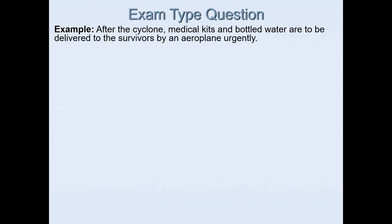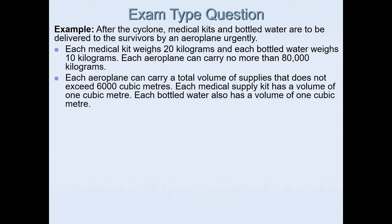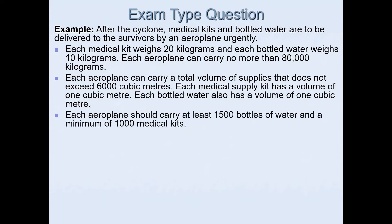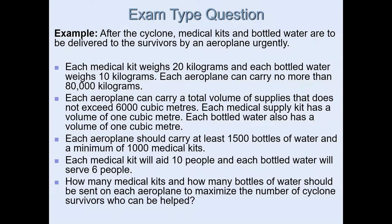In this example, after a cyclone, medical kits and bottled water are to be delivered to survivors by airplane urgently. Each medical kit weighs 20 kg and each bottled water weighs 10 kg. Each airplane can carry no more than 80,000 kg and a total volume not exceeding 6,000 cubic metres. Each medical kit and each bottled water has a volume of 1 cubic metre. Each airplane should carry at least 1,500 bottles of water and a minimum of 1,000 medical kits. Each medical kit aids 10 people and each bottled water saves 6 people. The question asks how many medical kits and bottles of water should be sent on each airplane to maximize the number of cyclone survivors who can be helped.